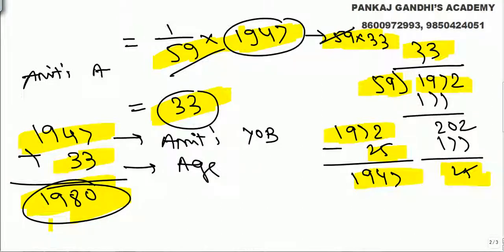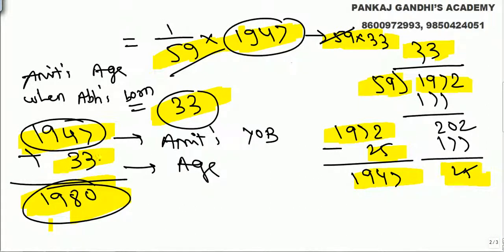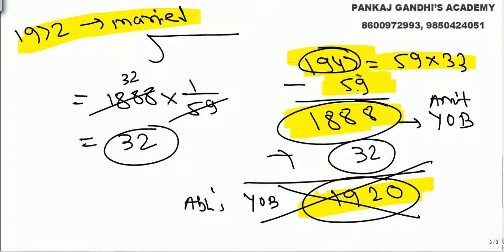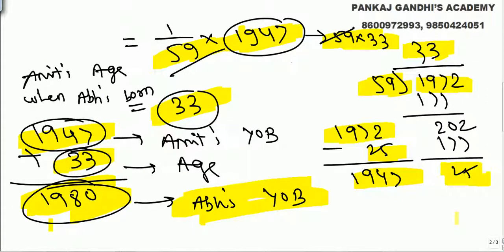So we need a multiple of 59 before 1972. 59 times 33 is 1947, so Amitabh's age when Abhishek is born is 33 — that's the possible answer. Year of birth of Amitabh is 1947, and Abhishek's year of birth is 1980. Marriage is in 1972 and Abhishek is born in 1980, so that's perfectly fine. If we take the earlier multiple 1888, Abhishek's year of birth comes much earlier than Amitabh's year of marriage, so that's not possible. The answer is 33.